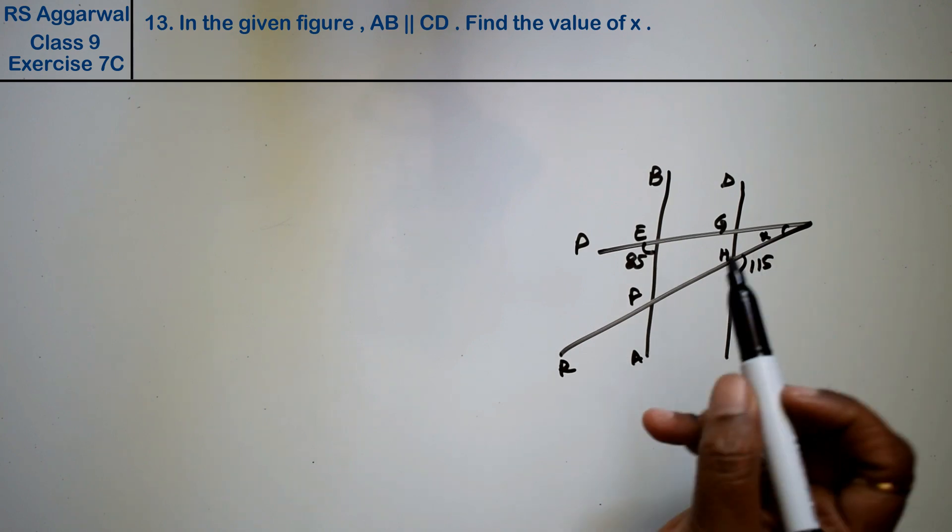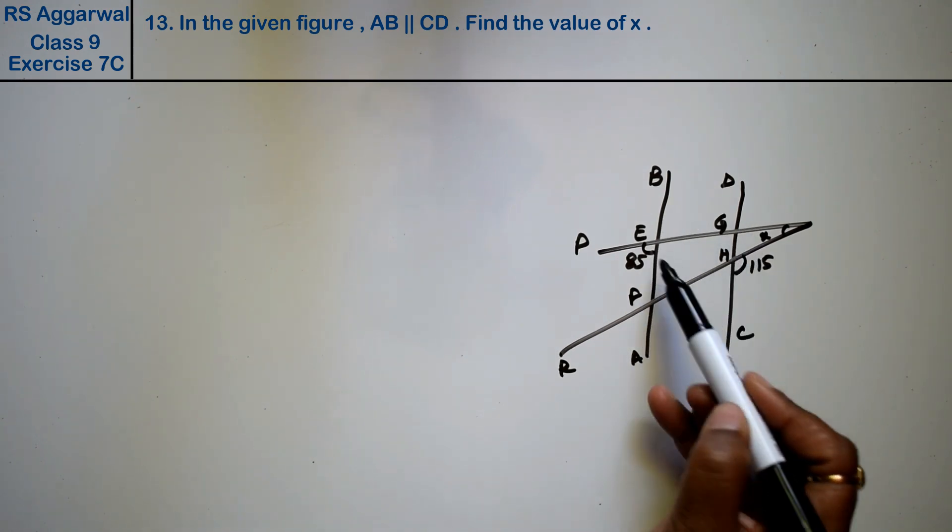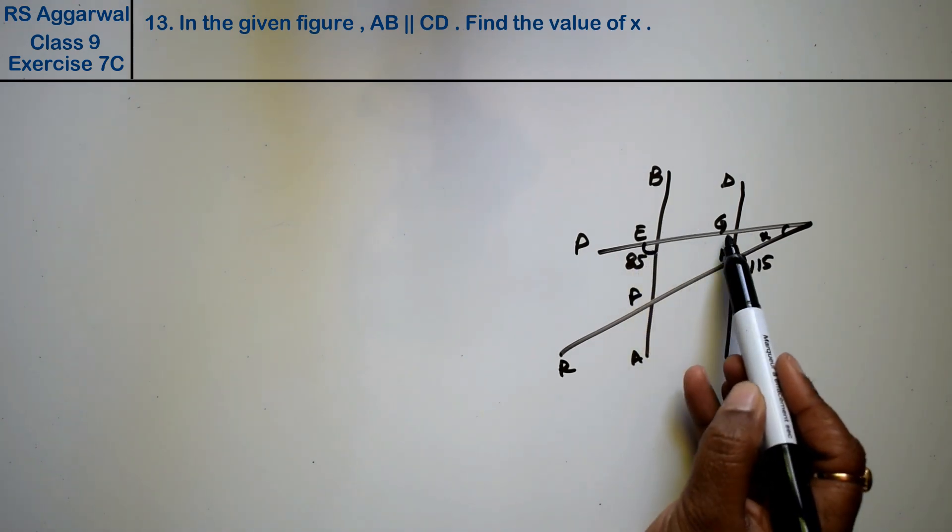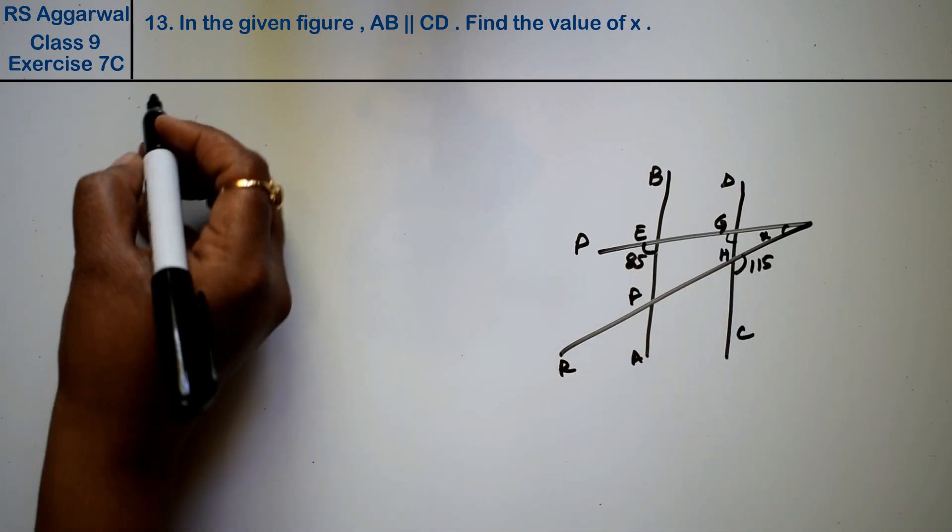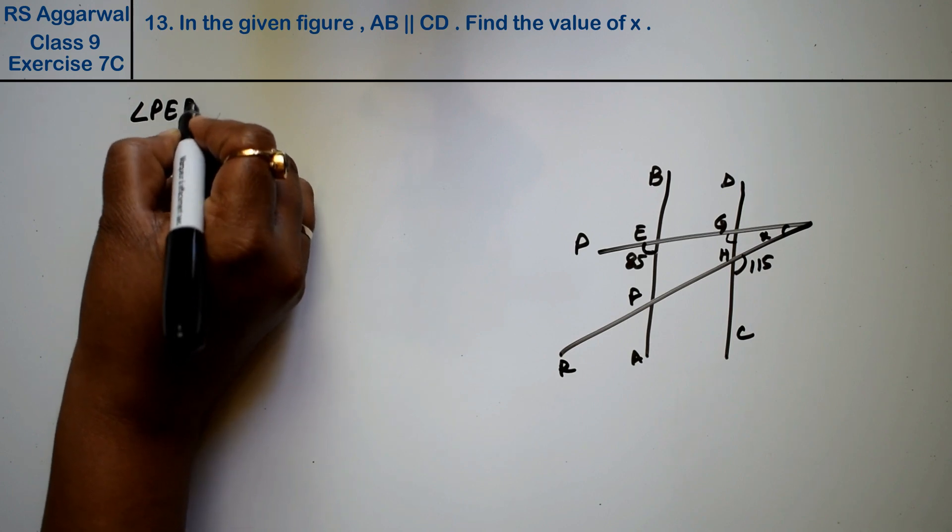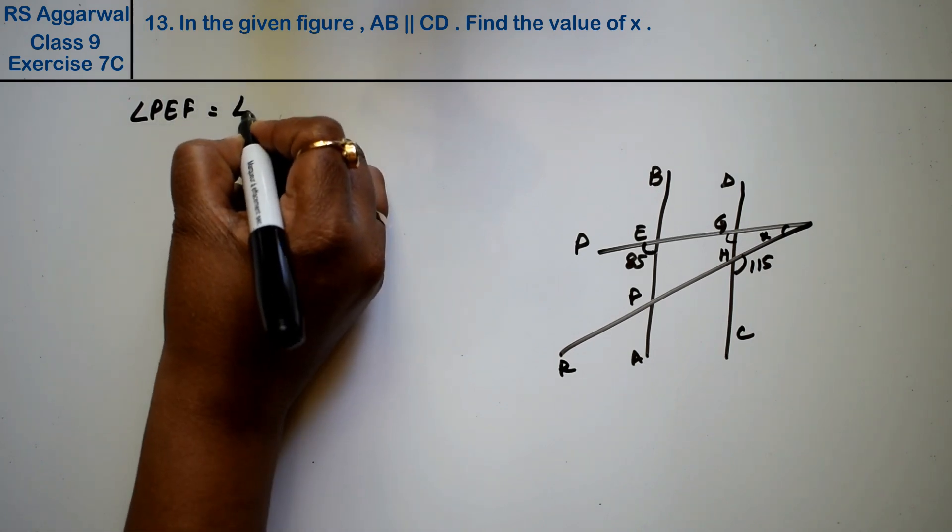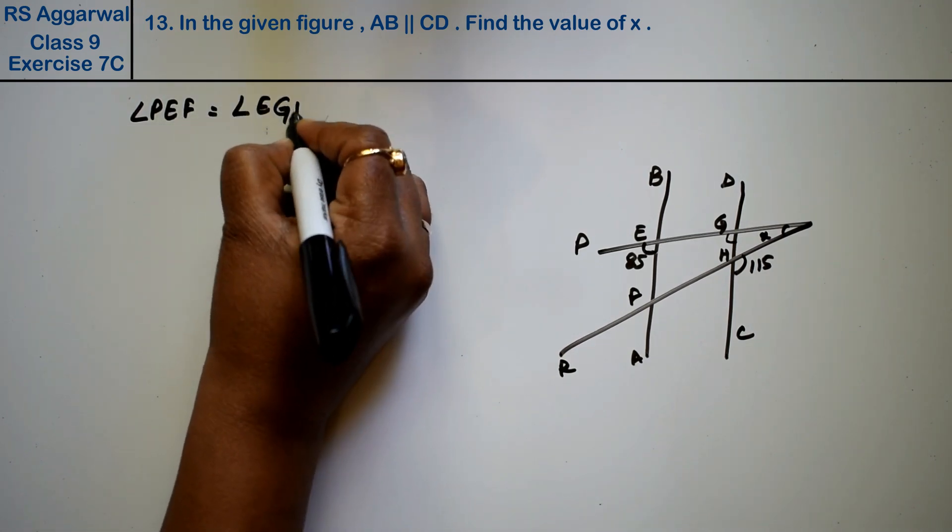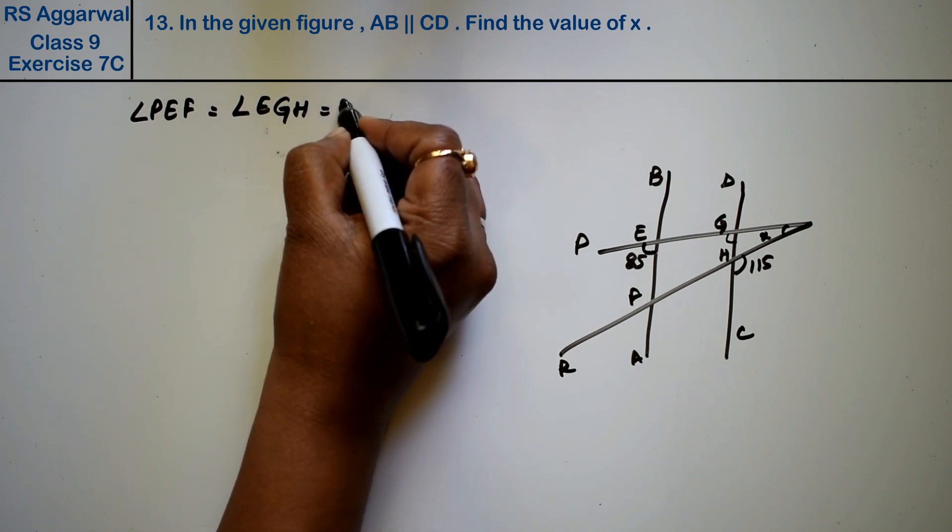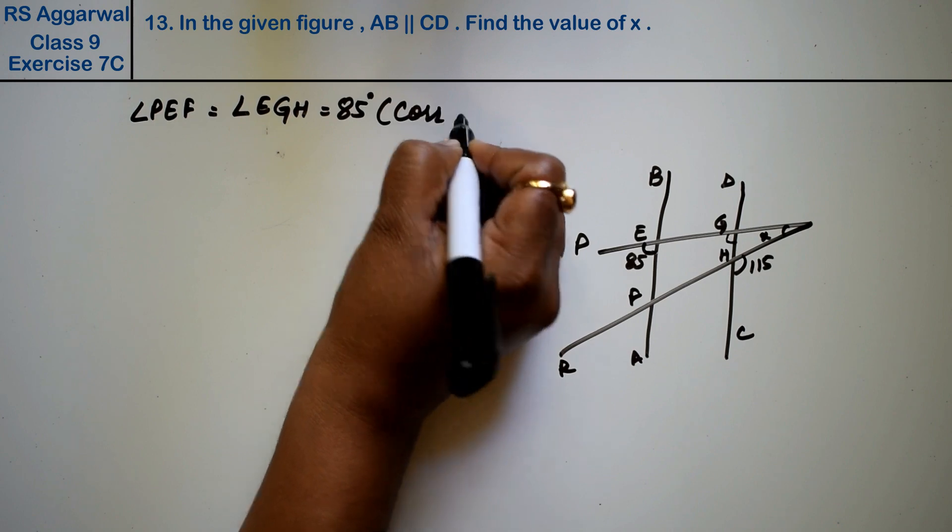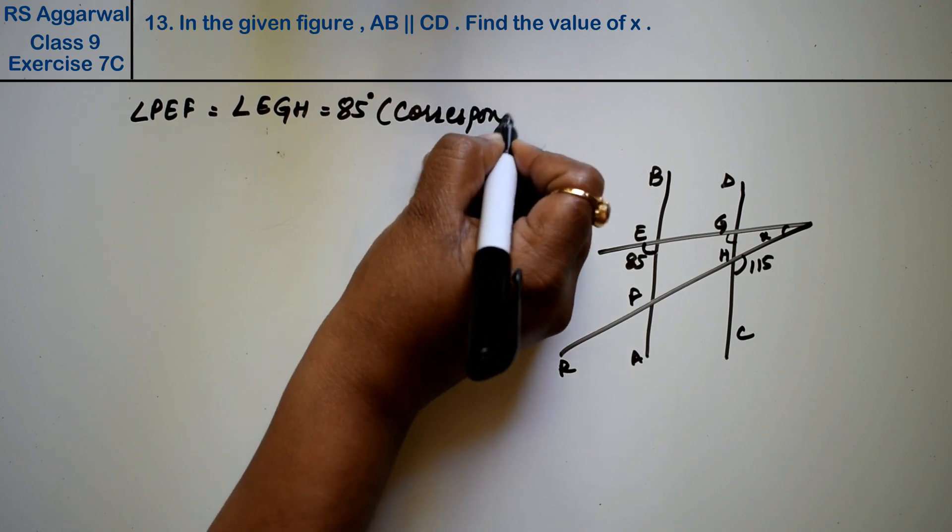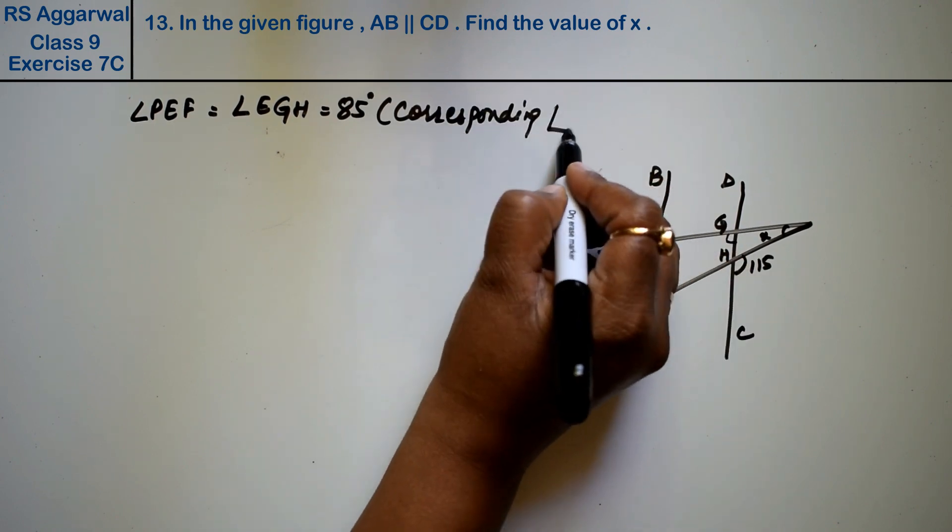So friends, how will we solve this with these two parallel lines? This angle is equal to this angle because these are corresponding angles. So angle PEF is equal to angle EGH equals 85 degrees, because these are corresponding angles.